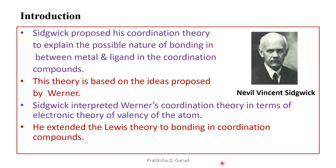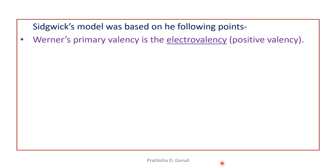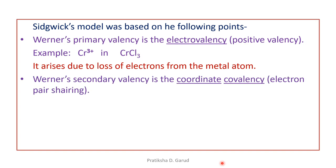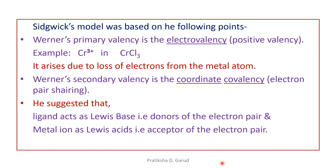He extended Lewis's theory to the bonding in coordination compounds. The Sidgwick model was based on the following points. The first point was that Werner's primary valency is the electrovalency, that is the positive valency. For example, Cr³⁺ in CrCl₃. It arises due to the loss of electrons from the metal atom. Whereas, Werner's secondary valence is the coordinate covalency, that is the electron pair sharing. Based upon this, he suggested that ligands act as Lewis bases, that means donors of the electron pair, whereas metal ions act as Lewis acids, that means acceptors of the electron pair.